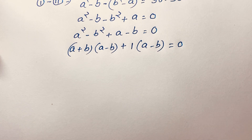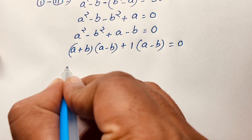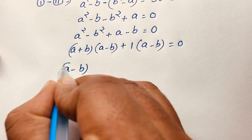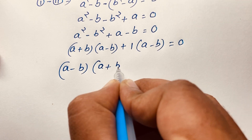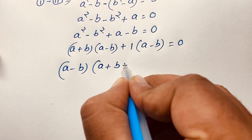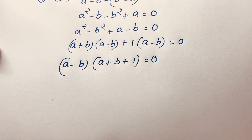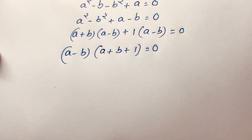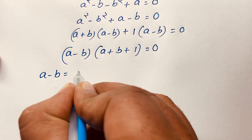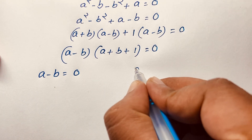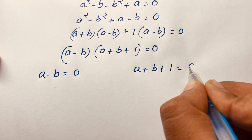Now I can say easily here is A minus B — this is A minus B — so I take A minus B as common. This divides to give A plus B, and this divides to give positive 1, equal to 0. So we will find out here two cases. Our first case is A minus B is equal to 0, and in the other case A plus B plus 1 is equal to 0.